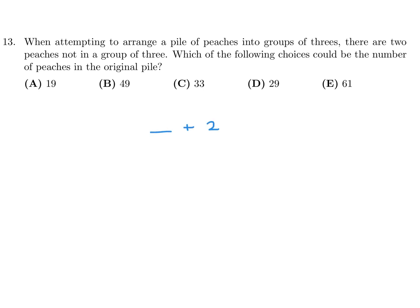Let's check: 19 is 18 plus 1, a multiple of three plus one — not that. 49 is 48 plus 1, also a multiple of three plus one. 33 is itself a multiple of three. 29 is 27 plus 2, so this is the correct answer. And 61 is a multiple of three plus one. The multiple of three plus two is what we want: the answer is D for number 13.